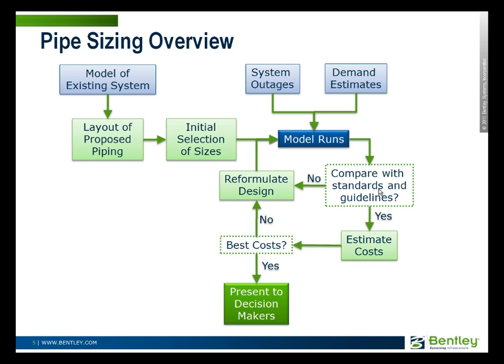If it shows that it doesn't work well, then you go through and reformulate the design — maybe increase the size of pipes or decrease it, or add another tank — and continue making the runs until you get something that is believable and looks the way you want. Then you can present this up the line to the decision makers, who may not be modelers but may be the chief of engineering, the manager of the utility, or whoever has to approve capital purchases. That's basically a high-level overview of the use of modeling in pipe sizing.